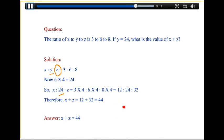So, now we add up x plus z. Therefore, x plus z is equal to 12 plus 32 is equal to 44. So, the answer is x plus z is equal to 44. That's all.